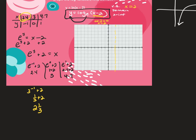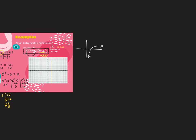We plug in for y instead of x because in log form, when you convert to exponential, the y becomes the exponent. On exponential graphs we plug in for x; on log graphs we plug in for y. So if it's y equals 3 to the x, you plug in for x. If it's y equals log base 3 of x, you convert to exponential and then plug in for y.